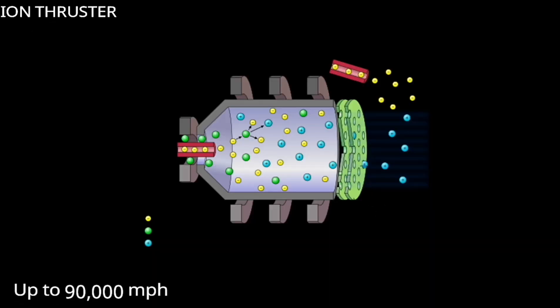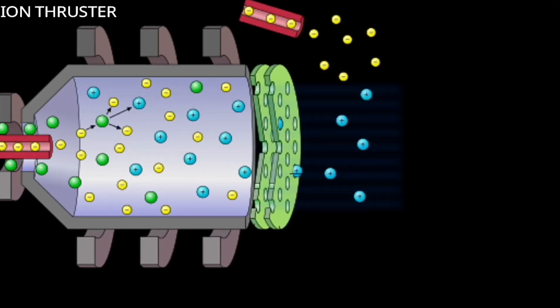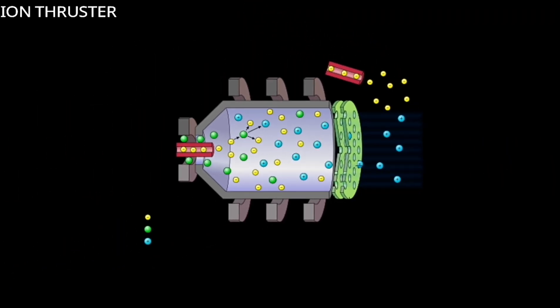And then the positive-charged ions are accelerated out of the thruster as an ion beam, which produces thrust. With this system, you can travel in the universe silently in any direction, instead of moving in one direction as space rockets do.